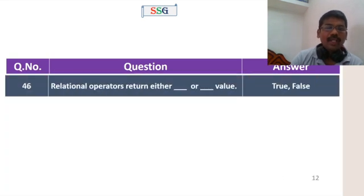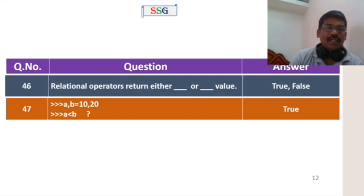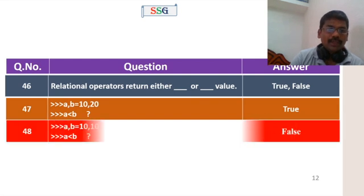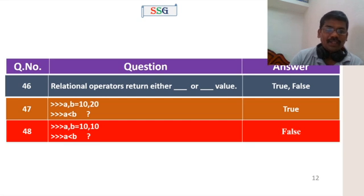Next one: relational operator returns either true or false. For example, a = 10, b = 20, and then a less than b means 10 less than 20, so the condition is true. Similarly, 10 less than 10 — the condition is automatically false.